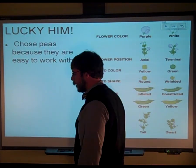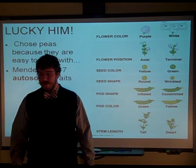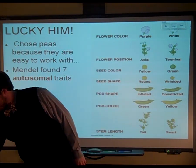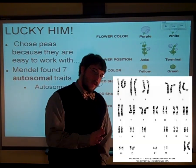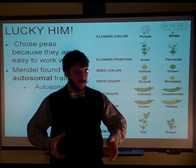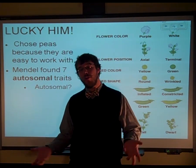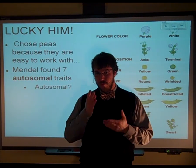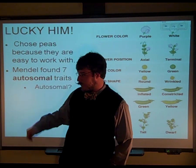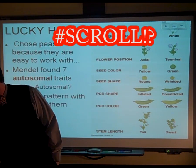He was pretty lucky because the plants he decided to work with had very easy-to-measure traits. They had seven traits, and they're all autosomal traits. Remember when we did the karyotype — we talked about autosomes versus sex chromosomes. The autosomes are our regular chromosomes, and autosomal traits are the ones found on those autosomes. For us, it's those 22 pairs other than the sex chromosomes.